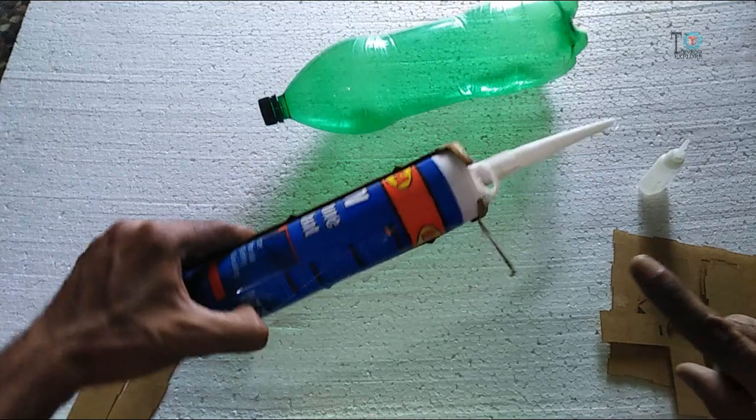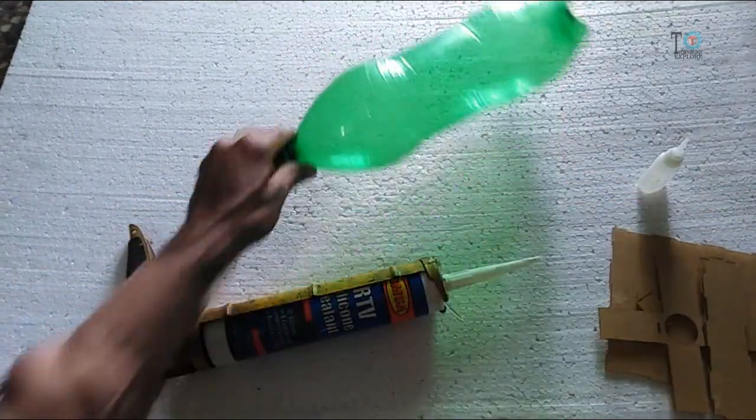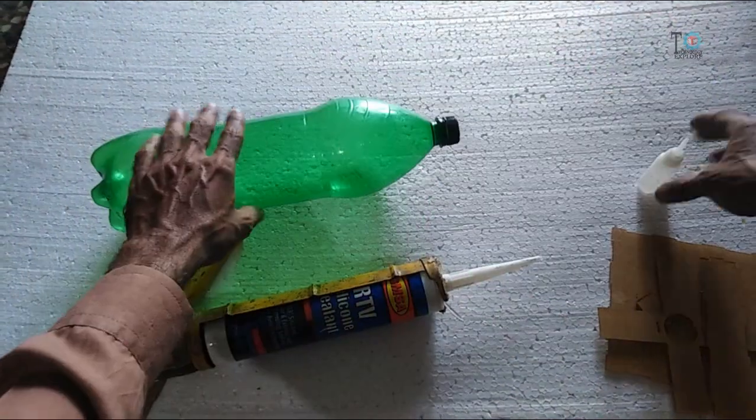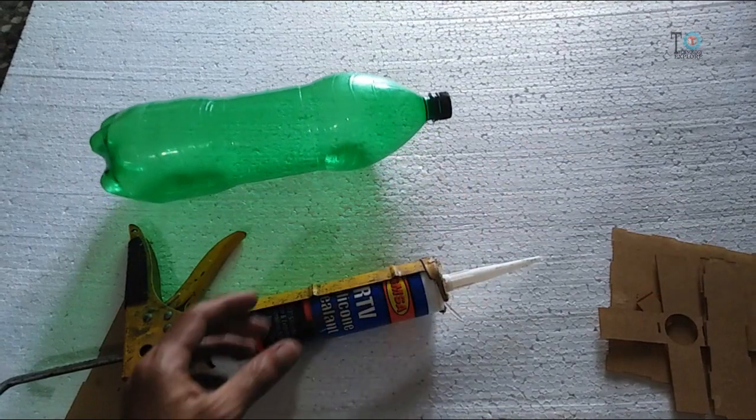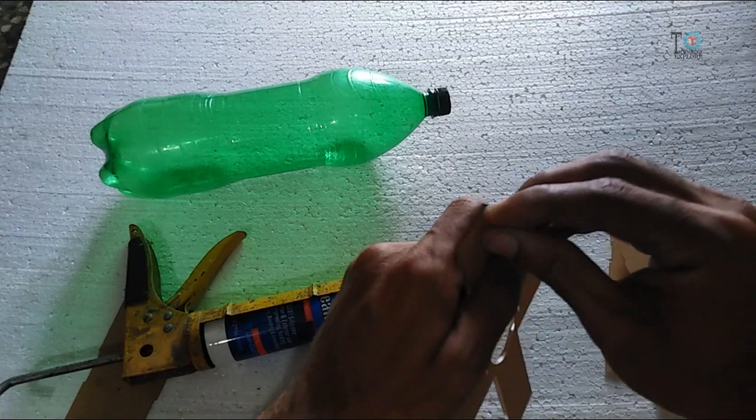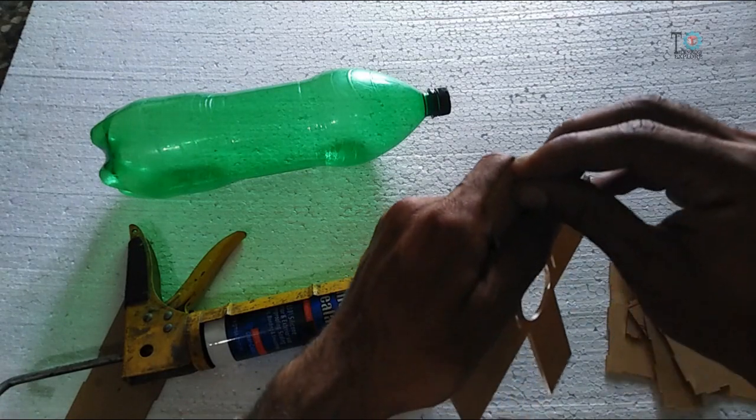You will also need this transparent silicone and a cola bottle and also permanent glue. So let's start. First of all, remove the paper protection from all sheets.